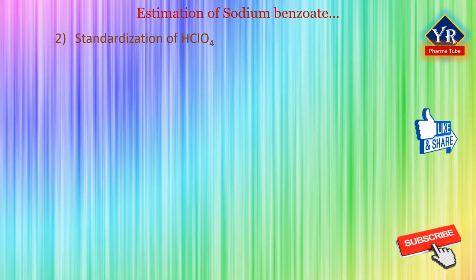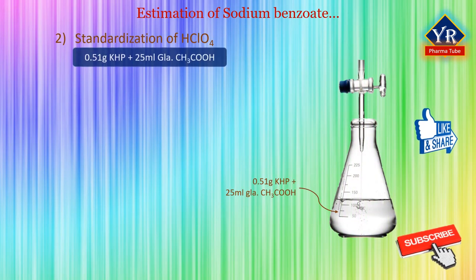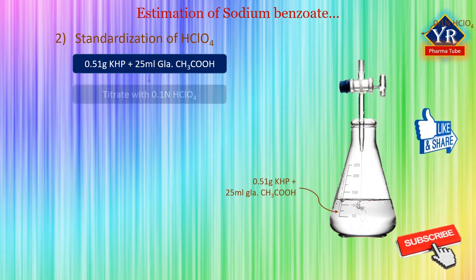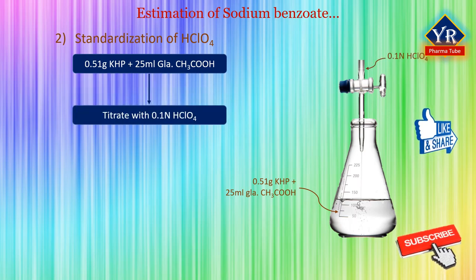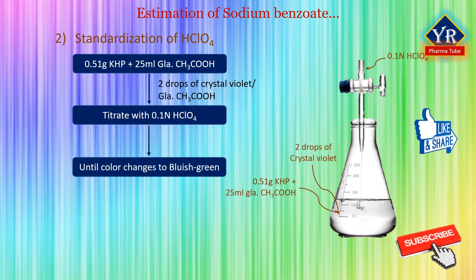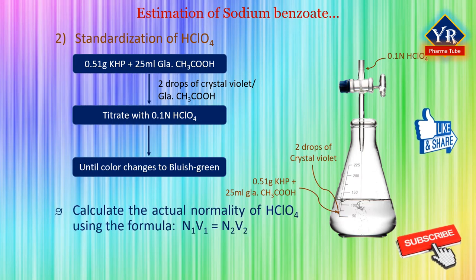For the standardization of perchloric acid, accurately weigh about 0.51 grams of potassium hydrogen phthalate in a 100 ml conical flask and add 25 ml of glacial acetic acid, attaching a reflux condenser with a silica gel drying tube. The prepared solution is 0.1 normal potassium hydrogen phthalate. Warm the conical flask until all the potassium hydrogen phthalate salt dissolves completely. Cool the solution and titrate with 0.1 normal perchloric acid, adding a few drops of 5% v/v crystal violet in glacial acetic acid as indicator. The color at the end point will change from blue to bluish green. Calculate the actual normality of perchloric acid using the formula N1V1 = N2V2.